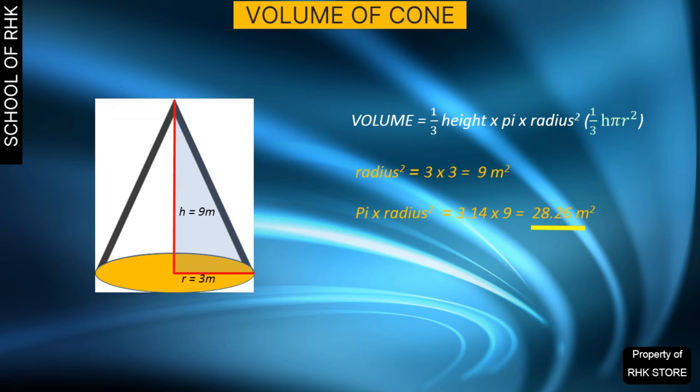that is just the area of the base of the circle. But now we need to multiply that base area by the one-third times the height of the cone. One-third times nine meters is three meters, and three